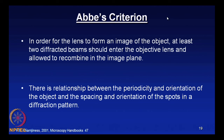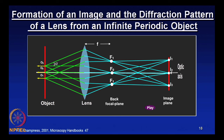It is the Abbe criterion. In order for the lens to form an image of the object, at least two diffracted beams should enter the objective lens and be allowed to recombine in the image plane. Going back to the image animation from the last class, the rays coming from this periodic object — from O1, O2, O3 — pass through the glass lens, and at least two diffracted beams converge into the image plane to form an image. The Abbe criterion states that at least two diffracted beams will recombine to form an image.